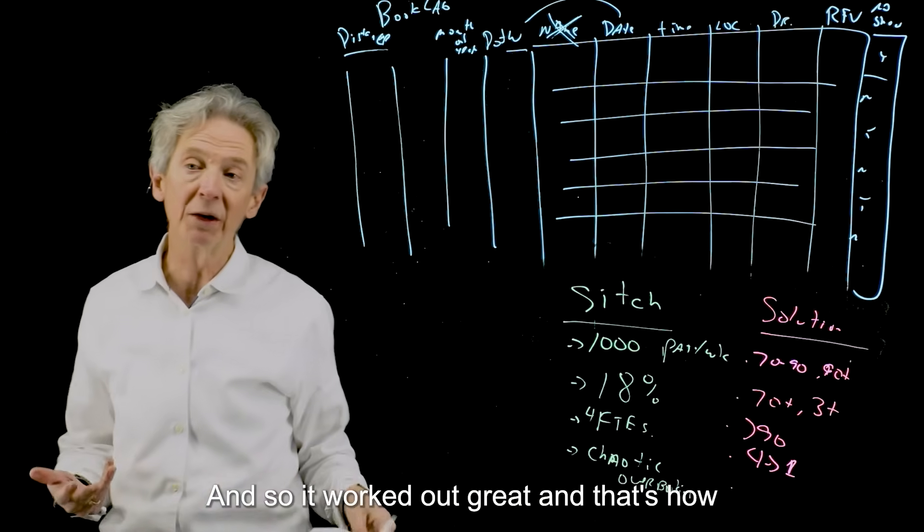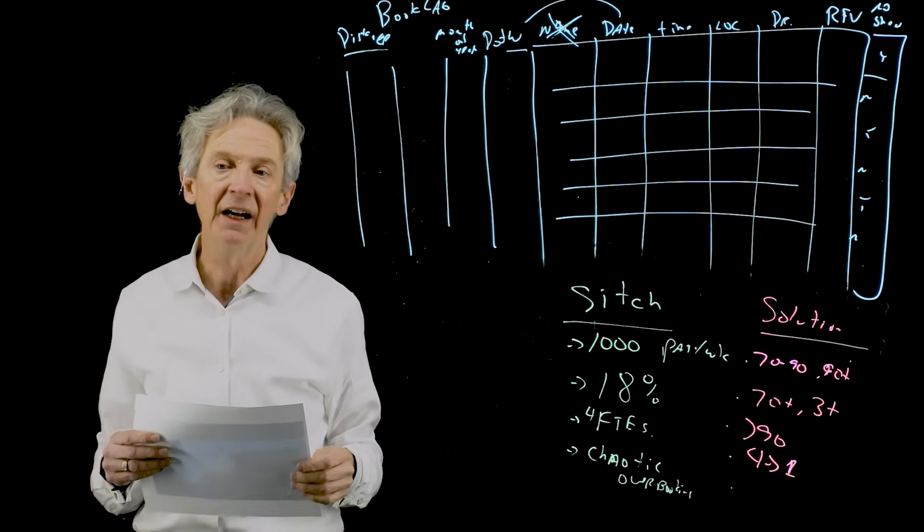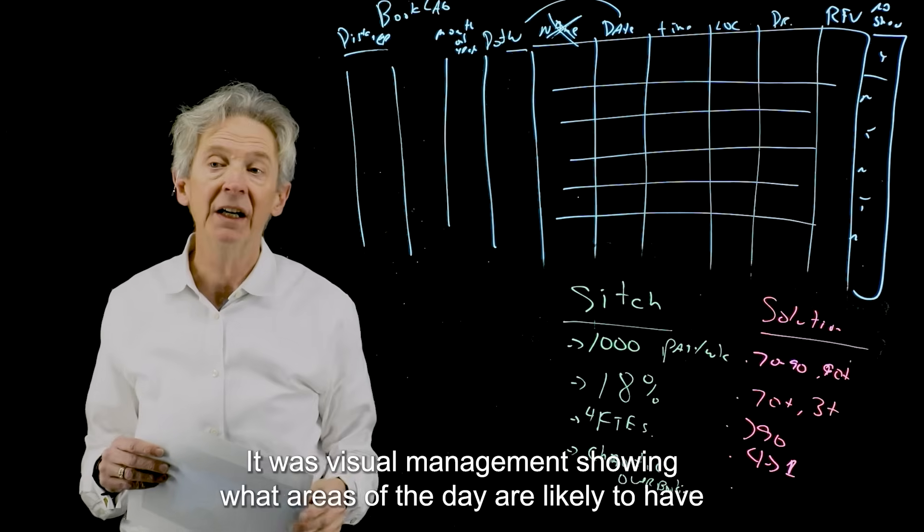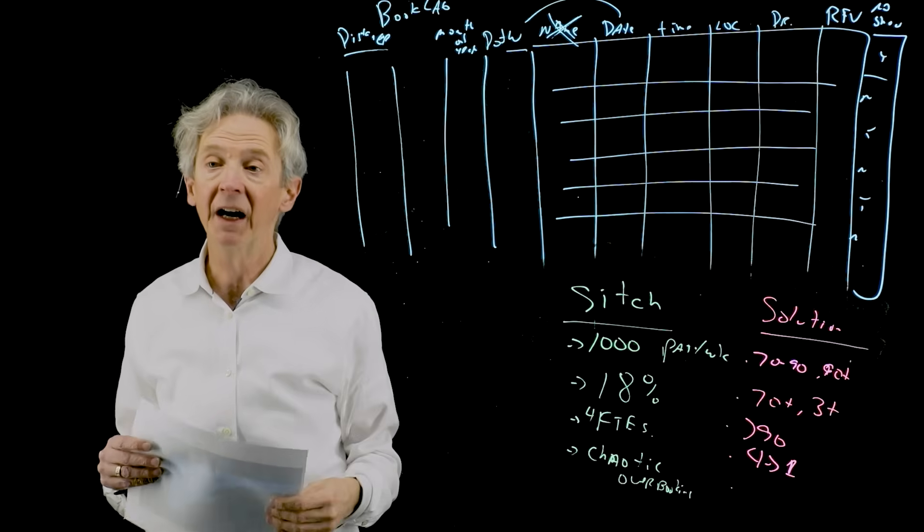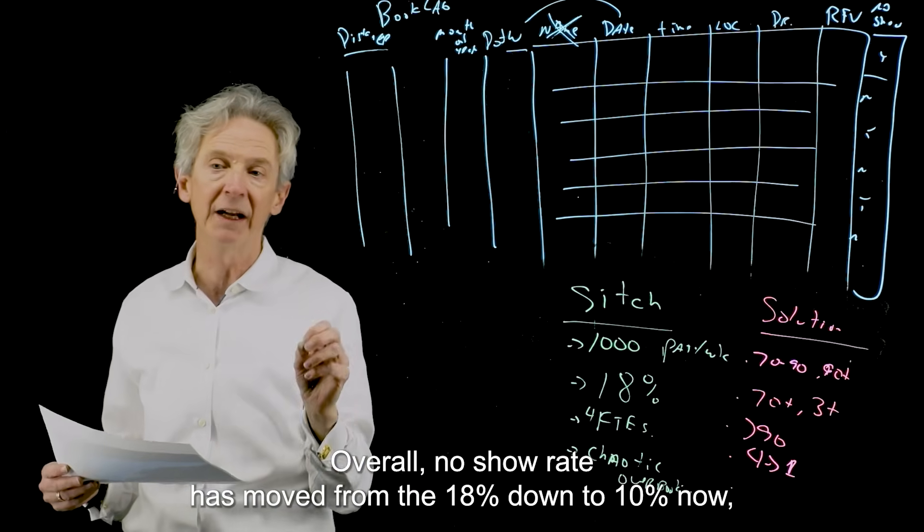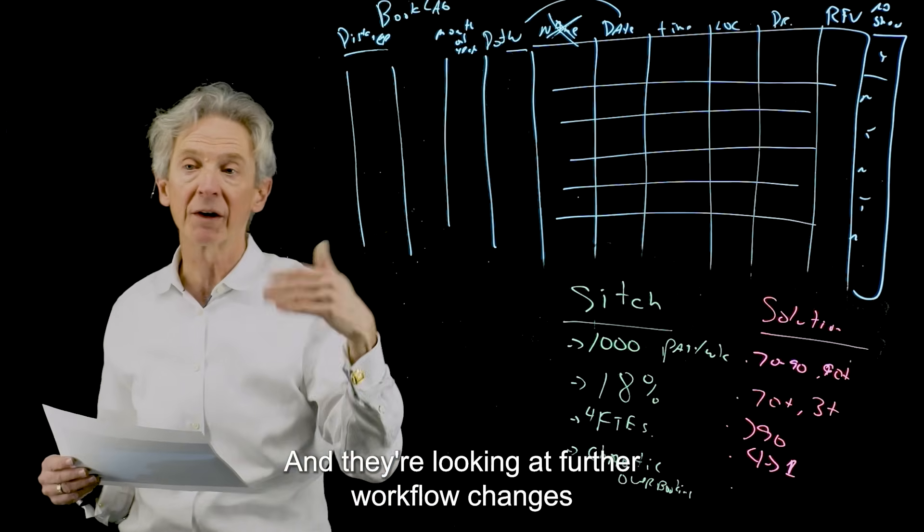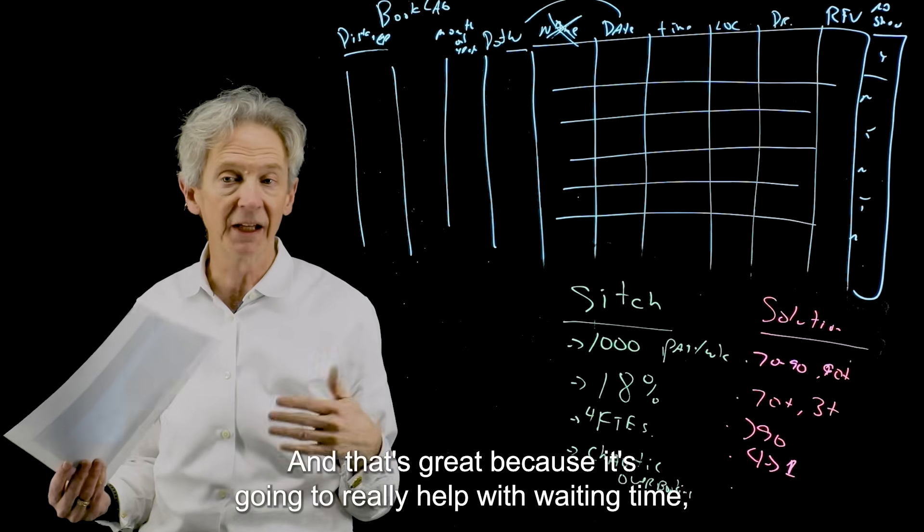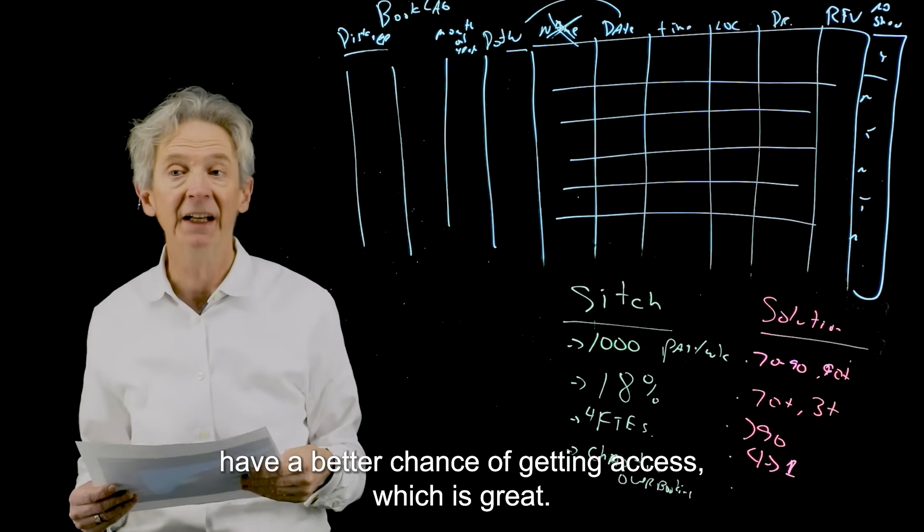And so it worked out great and that's how they integrated into the workflow and there's various ways to do it, but it was smart overbooking. It was reduced FTEs calling patients. It was visual management showing what areas of the day are likely to have no shows and allowing the staff to be empowered to overbook in the right places and deal with that. So it's been a great success there. Overall no show rate has moved from the 18% down to 10% now. And they're looking at further workflow changes on those sorts of things to try and drive that down to 5%. And that's great because it's going to really help with waiting time, added revenue, patients that need access to their services have a better chance of getting access, which is great.